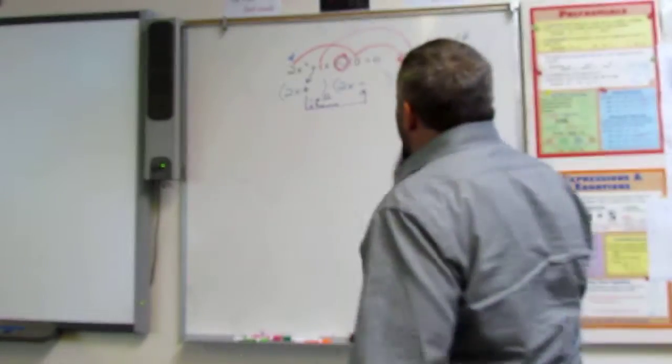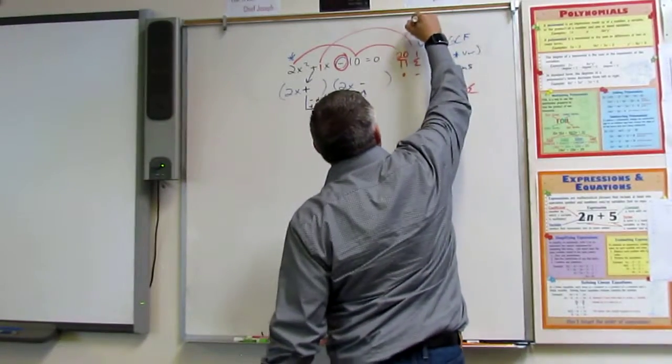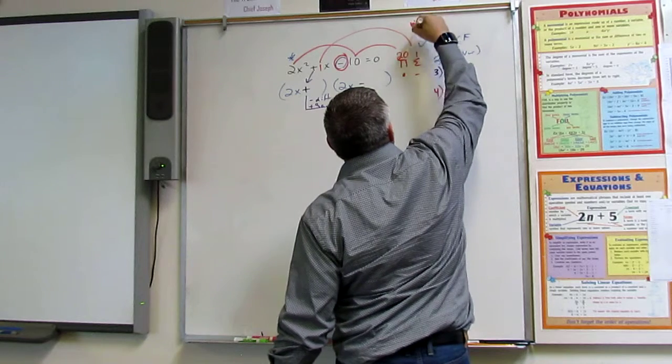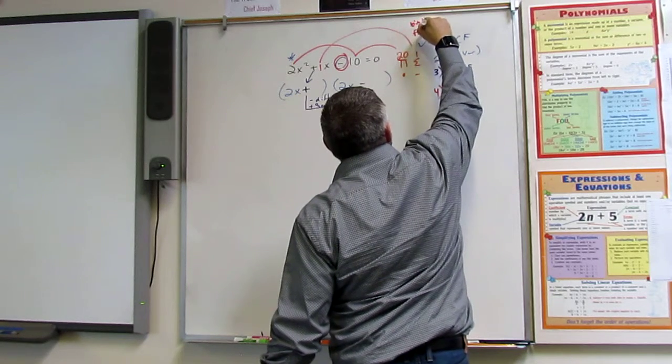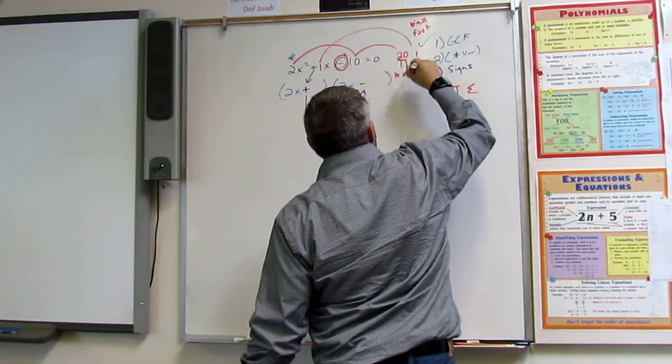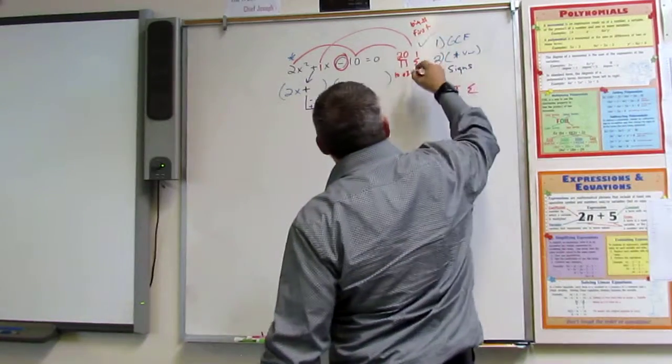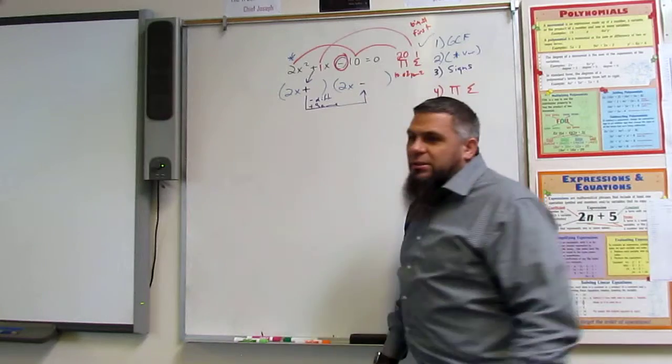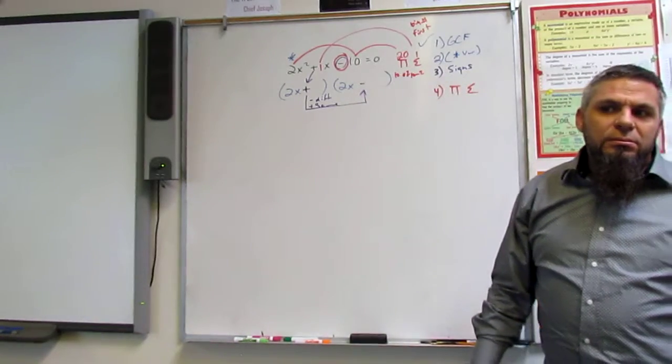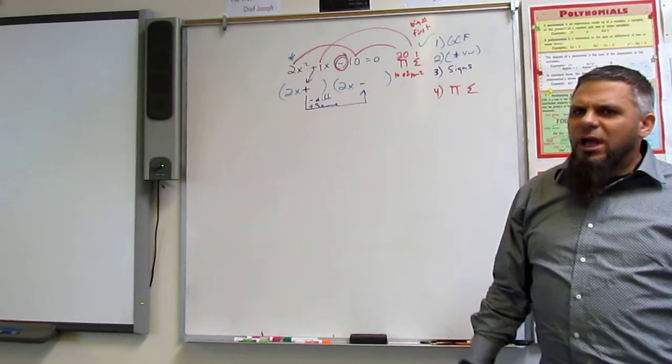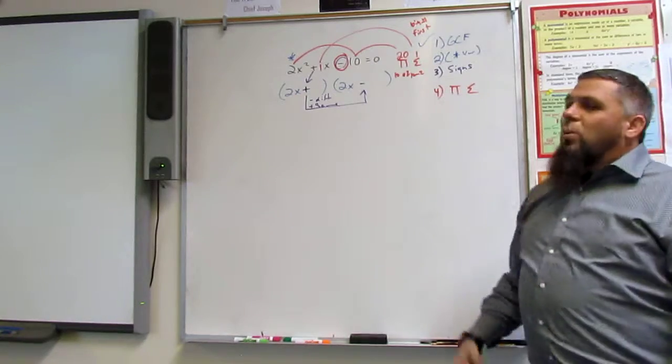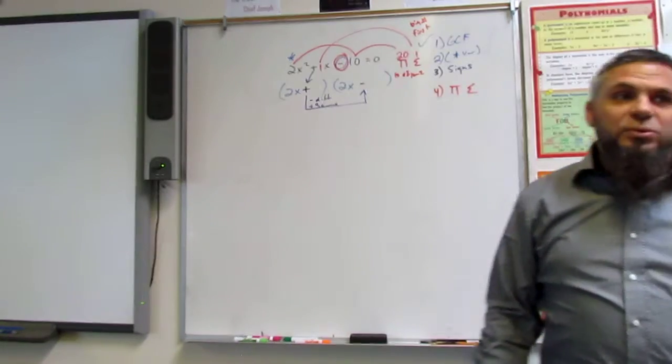So what multiplies to be 20 but is different by 1? Okay? So what if we come up with 10 and 2? Remember, always big number first. Okay? Big number first. So 10 and 2. So what if I come up with 10 and 2? Is that going to be 1? Is 10 minus 2 1? No.